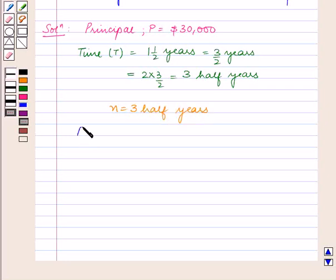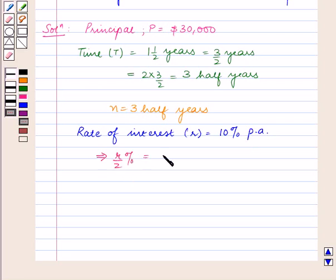The rate of interest R is given as 10% per annum. This implies R/2% = 10/2% = 5% half-yearly.